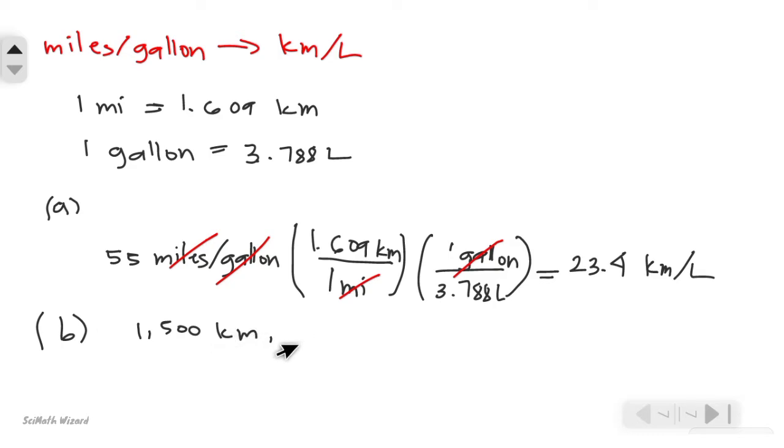We also have 45 liters per tank. To solve that using the answer from part A, which is 23.4 kilometers per liter, the volume of gas required can be solved like this.